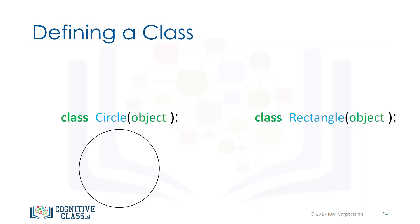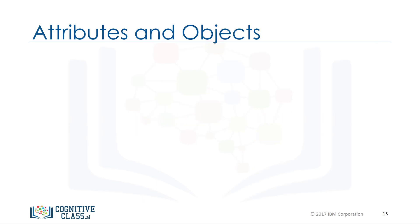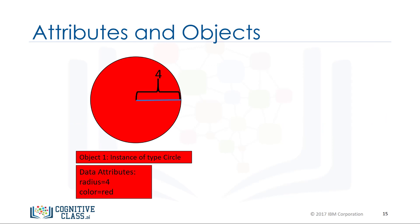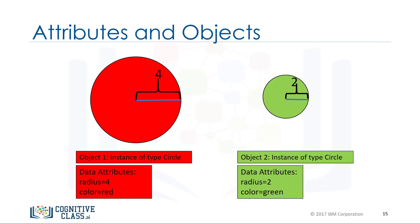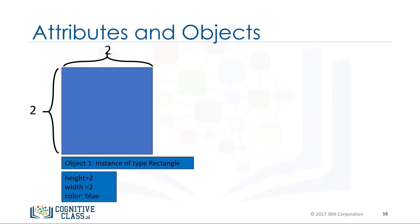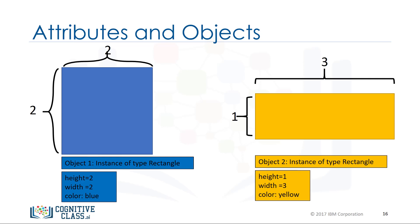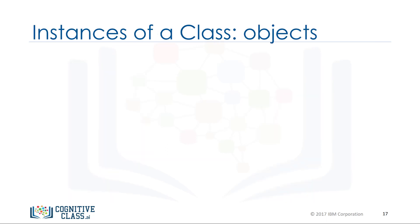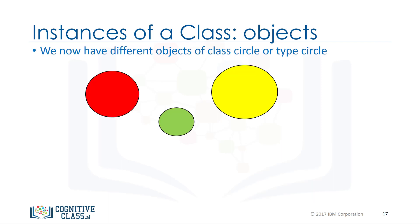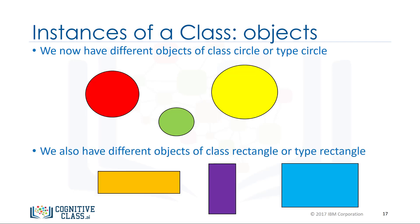Classes are outlines — we have to set the attributes to create objects. We can create an object that is an instance of type circle where the color attribute is red and the radius is 4. We can also create a second circle instance with color green and radius 2. We can create a rectangle instance with color blue and height and width of 2, and another rectangle with color yellow, height 1, and width 3. We now have different objects of class circle and different objects of class rectangle.